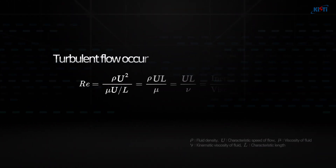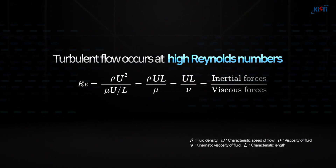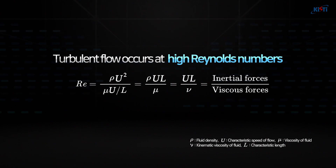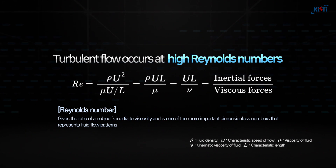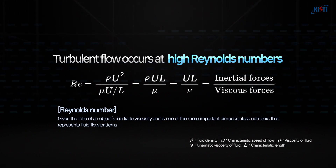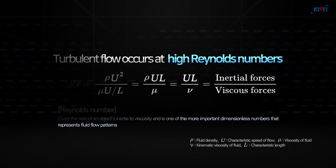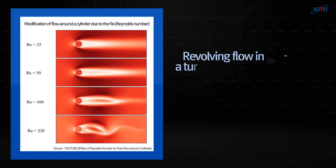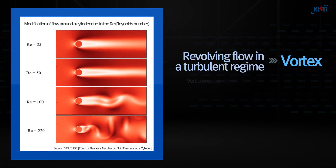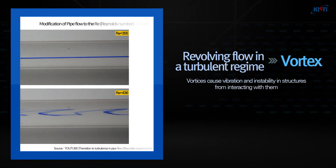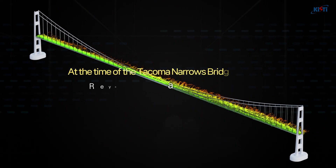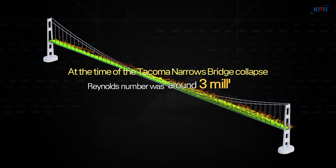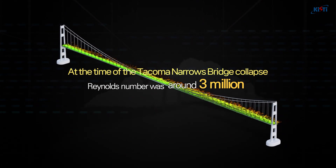Turbulent flow typically occurs at high Reynolds numbers. The Reynolds number gives the ratio of an object's inertia to its viscosity, and it is one of the more important dimensionless numbers that represents fluid flow patterns. The revolution of flow in the turbulent regime is referred to as a vortex, which can cause vibration and instability in structures when interacting with them. The Reynolds number during the actual collapse of the Tacoma Narrows Bridge was around 3 million, which is considered a high Reynolds number.